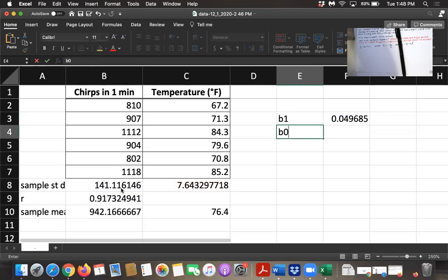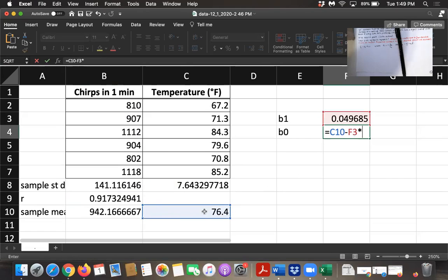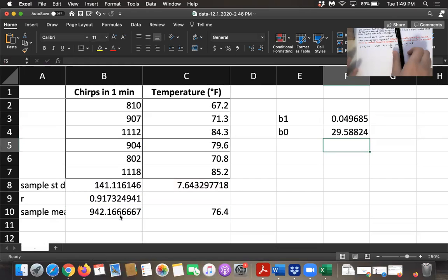And b sub 0, that is my y-intercept. That is y bar, so our mean for the y's minus b sub 1 times x bar. And so we have those two values.